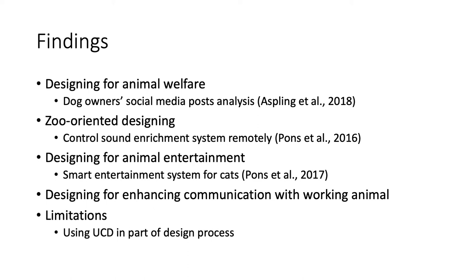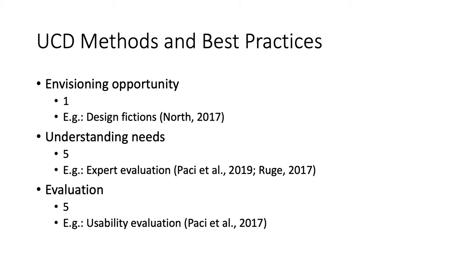In 2016, a new interaction mechanism was proposed for animals in zoos to control sound enrichment systems remotely. The third direction is designing for animal entertainment. For instance, an intelligent entertainment system was designed for cats. And the last direction is designing for enhancing communication with working animals. There are also limitations in these articles — for example, in most of the articles, UCD methods are only used in one or two parts of the design process, not the whole process.